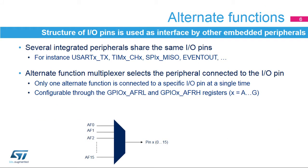Several integrated peripherals such as the USART, timers, SPI, and others share the same I/O pins in order to interface with the external environment. Peripherals are configured through an alternate function multiplexer, which ensures that only one peripheral is connected to the I/O pin at a single time. This selection can be changed during run time through the GPIO-X AFRL and AFRH registers.